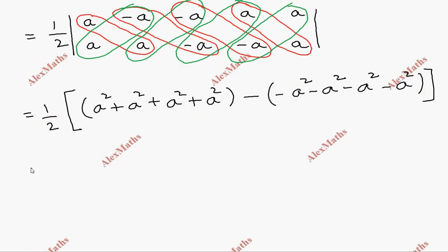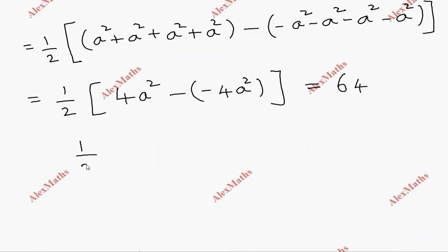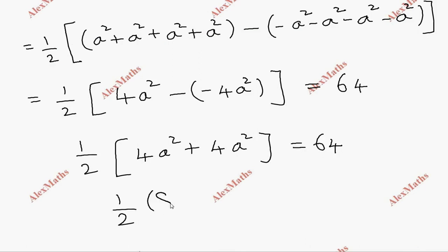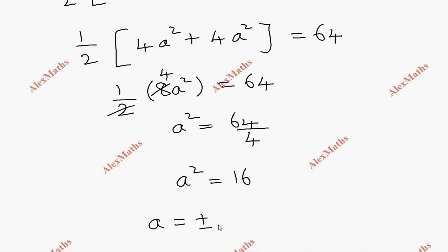The total becomes 1 by 2 times 4a squared, minus 1 by 2 times minus 4a squared. Since the area of the quadrilateral is 64, we write: 1 by 2 times (4a squared plus 4a squared) equals 64. That gives 1 by 2 times 8a squared equals 64, so 4a squared equals 64, then a squared equals 16, and a equals plus or minus root of 16, so a equals plus or minus 4.